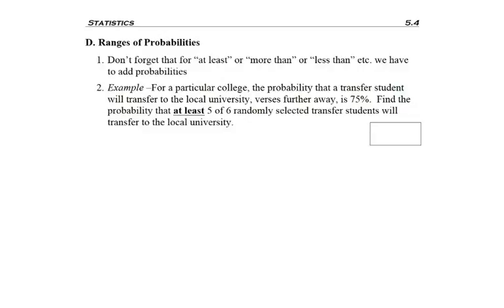In math, everything builds upon itself, so we have to watch out for what I refer to as ranges of probabilities. Remember, if we see some sort of phrase like 'at least,' 'more than,' 'less than,' or whatever phrase we see, often we have an OR probability, and so we're going to have to find multiple probabilities and then add those cases together.